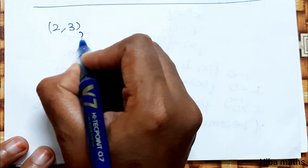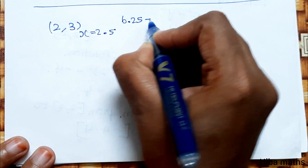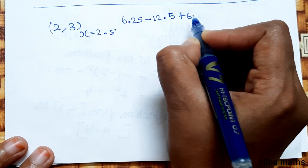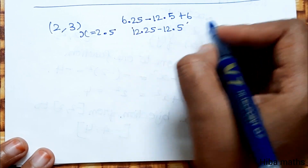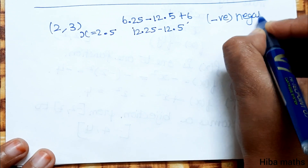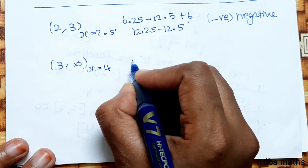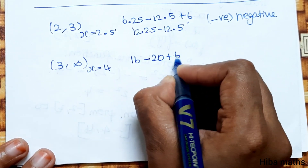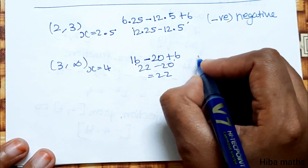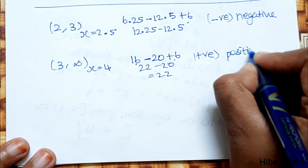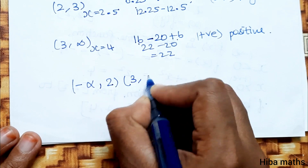So the interval minus infinity to 2 gives a positive value. In the interval 2 to 3, we substitute x equals 2.5: the value is negative. Then the interval 3 to infinity is positive again. So the expression is positive on minus infinity to 2 and on 3 to infinity, and negative on the interval 2 to 3.